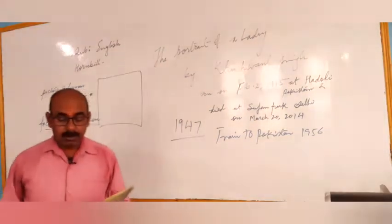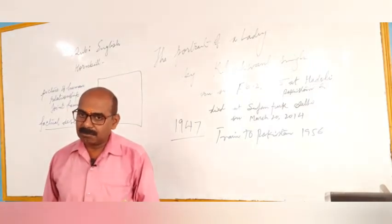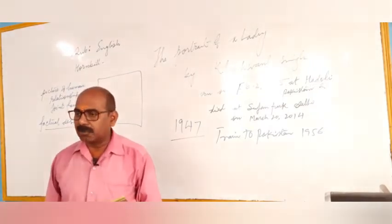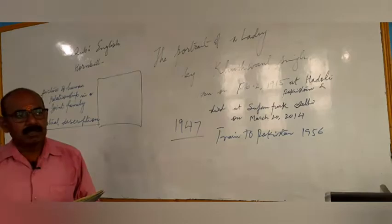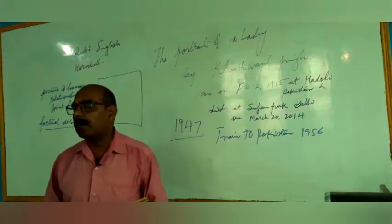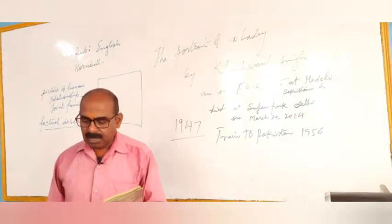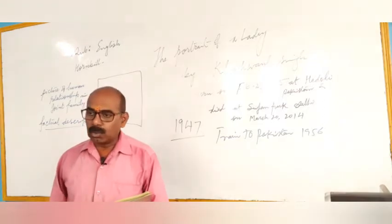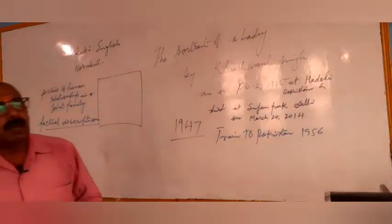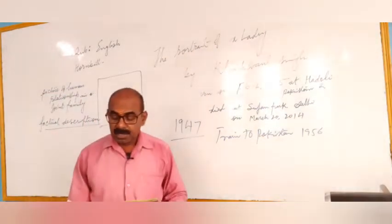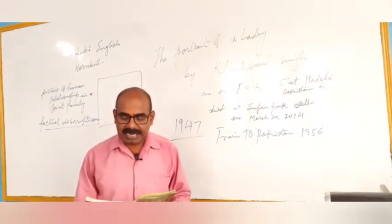Now here: 'My grandmother, like everybody's grandmother, was an old woman.' My grandmother — the author has used the first person personal pronoun 'my.' 'My' is used for the writer. The writer has been writing about himself. My grandmother, like everybody's grandmother — that is, generally, as she was looking — was an old woman. She had been old and wrinkled for the 20 years that I had known her.